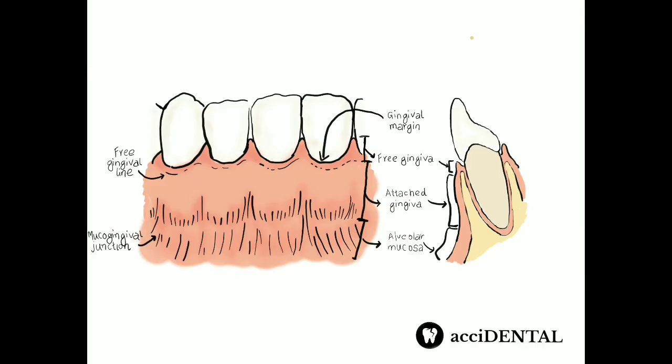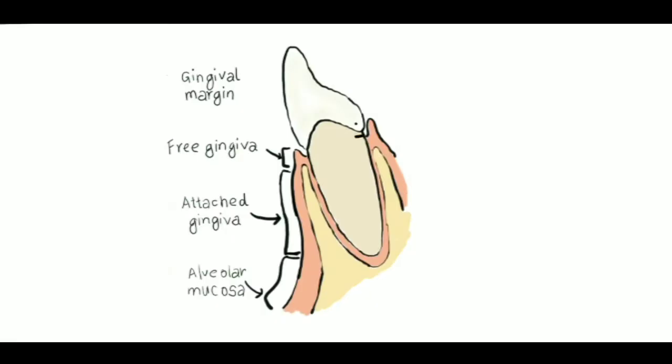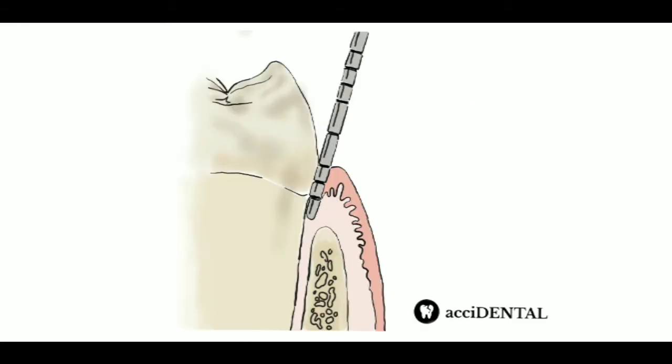Besides that, this also forms the soft tissue wall of our gingival sulcus and it is located on the enamel surface approximately 1.5 to 2 mm coronal to the CEJ. This can be separated from the tooth surface with the help of a periodontal probe.